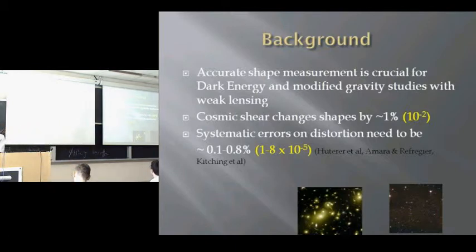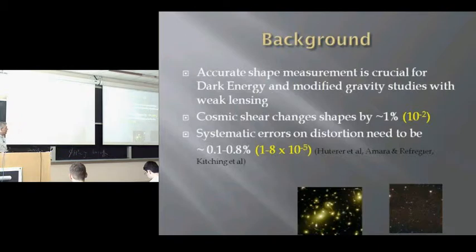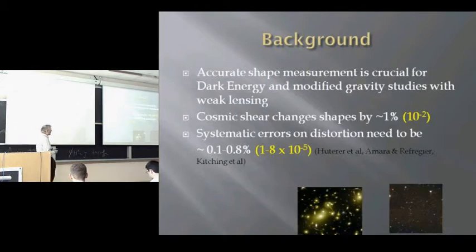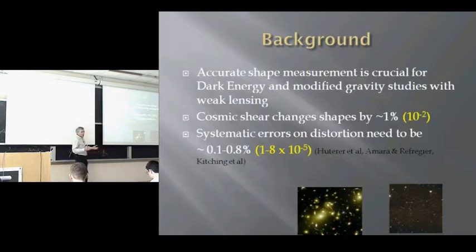There are two possible goals. One is to measure the dark energy equation of state to a certain accuracy, which might be 0.01 as the useful level. Another is to demand that the systematic error introduced by shape measurement is small in comparison with the statistical error on the quantity of interest — and that is obviously a moving target, as experiments get bigger and deeper and the statistical error keeps going down.